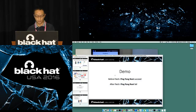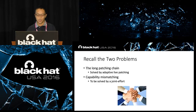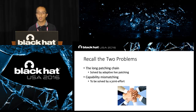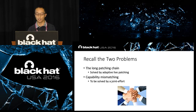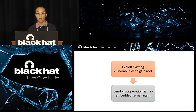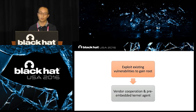This demo shows we fixed the vulnerabilities using adaptive kpatch. But this solution can be further improved. We have solved the long patching chain issue — researchers no longer need the long chain to deliver patches to devices. However, there is still the capability mismatching problem. Right now, we have to first gain root in order to collect kernel information and load the kernel module or inject binary code into memory. So we have to exploit the vulnerabilities first in order to fix them — which is unstable because trying to root may crash the phone.